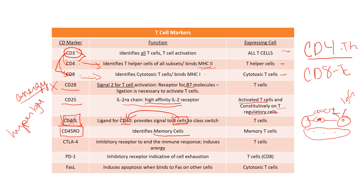Once the antigen is gone, we need to shut the response down because inflammation can be damaging. We do that with inhibitory receptors, and one of those is CTLA-4. CTLA-4 is an inhibitory receptor expressed on T cells that works to end the immune response once the threat is gone by inducing anergy. It takes the place of CD28 binding to B7 molecules — CTLA-4 binds B7 with about 100 times the strength that CD28 binds B7. As the antigenic burden gets lower, the higher-affinity CTLA-4 molecule will win out, T cells will become anergic, and eventually die off, contracting the T cell pool.